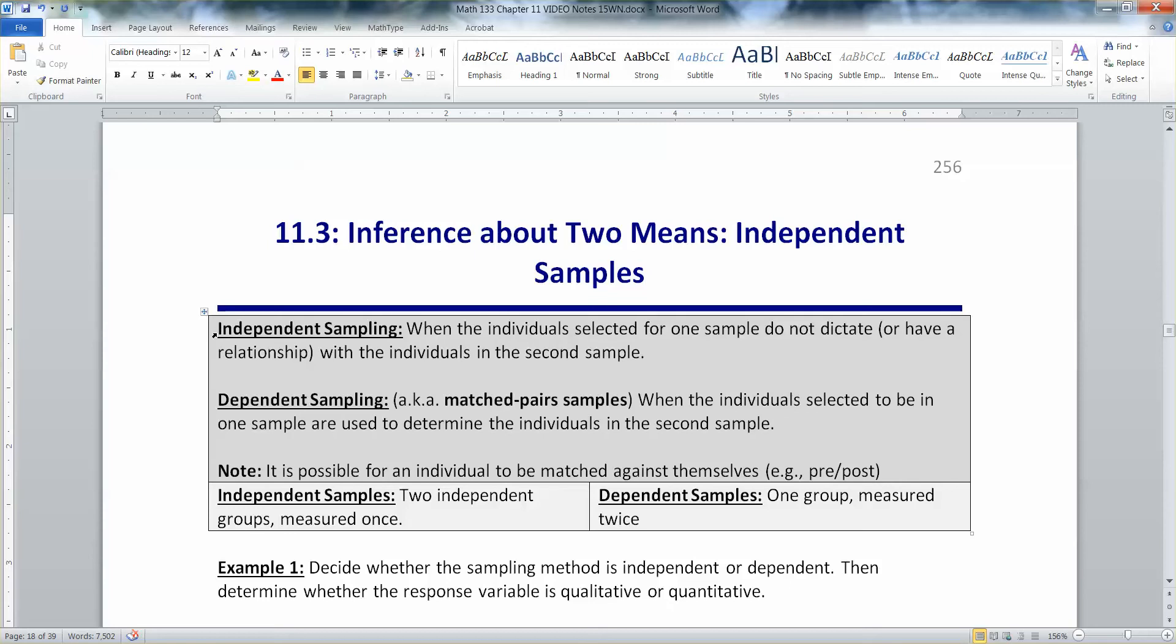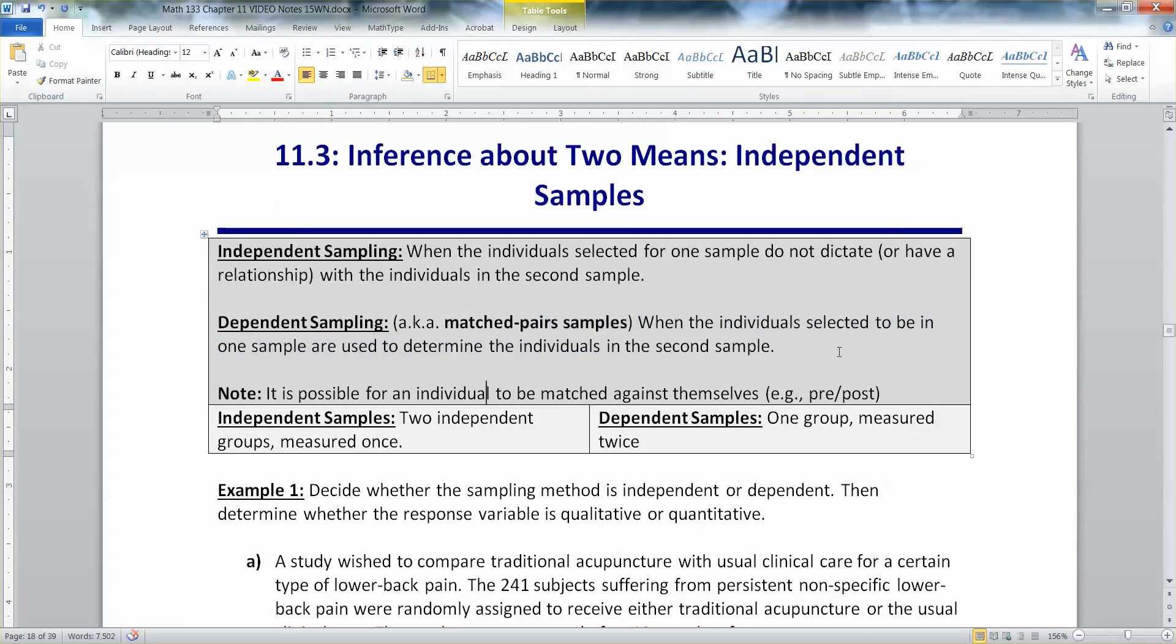Independent sampling is when the individuals selected for one sample do not dictate or have a relationship with the individuals in the second sample. Dependent sampling, which is often matched pair sampling, is when the individuals selected to be in one sample are used to determine the individuals in the second.